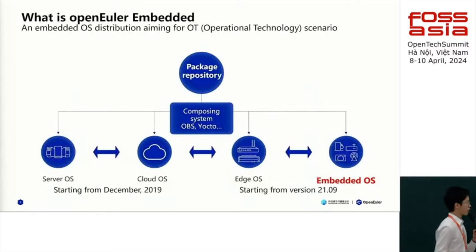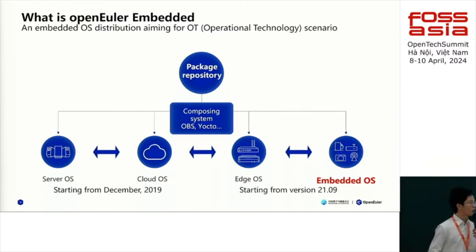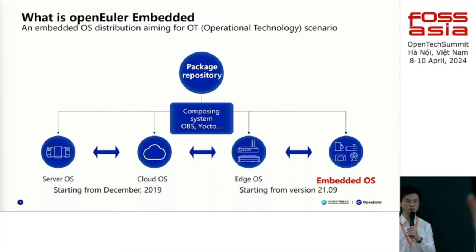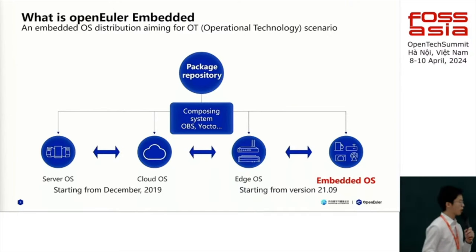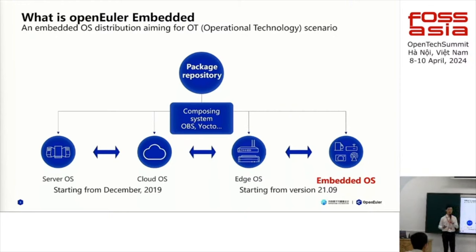Firstly, thanks to Dr. Sean's presentation about OpenEuler — now we may have a better understanding of what OpenEuler is. As we know, OpenEuler covers four main scenarios: server, cloud, edge, and embedded. OpenEuler Embedded focuses on providing competitive operating system technology for resource-limited hardware platforms. Because of the need to build a customized OS, we choose Yocto as our composing system — it's an open source project from the Linux Foundation that provides an easy way to tailor our operating system.